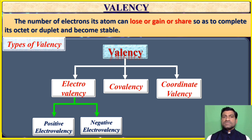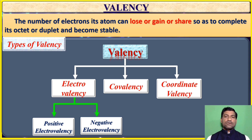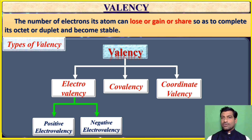There are three types of valency: electrovalency, covalency, and coordinate valency. The valency means the number of electrons an atom can lose, gain, or share to complete its outermost orbit and become stable.